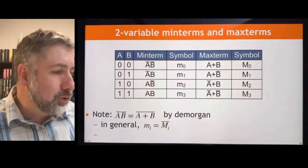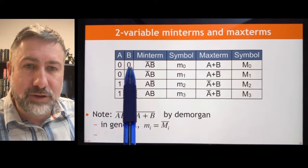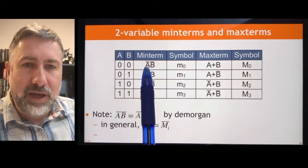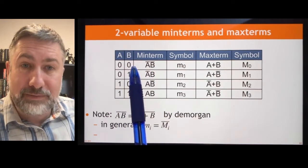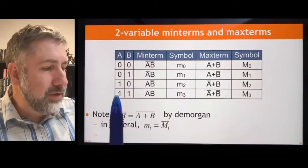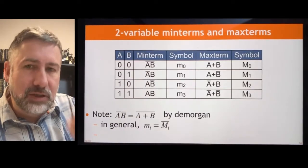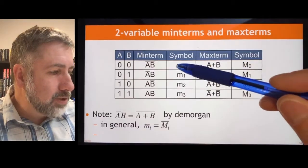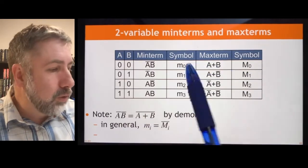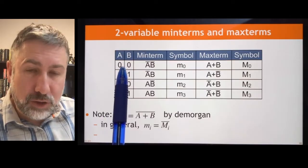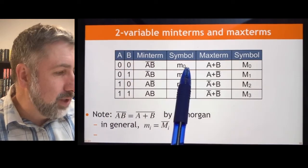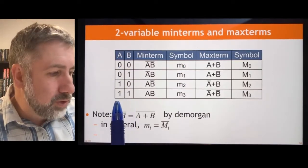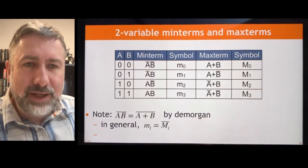For two variables, it's simple to write these out. A and b are our two variables and there are four possibilities: 0,0 — 0,1 — 1,0 — 1,1. These are the min terms corresponding to each input combination. A prime b prime will be true if a is 0 and b is 0; a b will be true if a is 1 and b is 1. Each represents a single possible input combination. We name these with a shorthand: min term, little m, where the number corresponds to the binary encoding of the input combination. So for min term 0, 0,0 is 0; 1,1 is 3 — and that's min term 3.